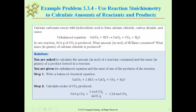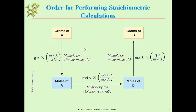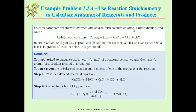Here's an example of an unbalanced equation that gets balanced, asking: knowing that 54.6 grams of CO2 is produced, how much HCl was consumed, and what mass of calcium chloride is produced? It's a two-part question. The first part asks you to convert from grams of CO2 to moles of HCl. The second part asks you to go from grams of CO2 all the way to grams of calcium chloride — that is, gram A → mole A → mole B → gram B.